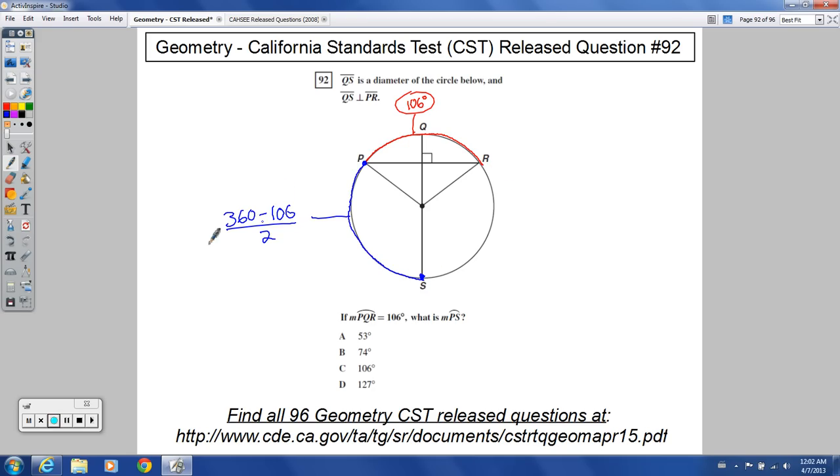The other half would be right here. So this would be 252 over 2... I'm sorry, that's 254 over 2, and that would be 127 degrees.